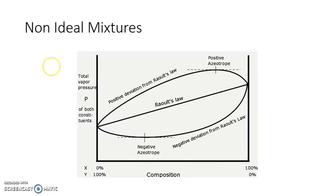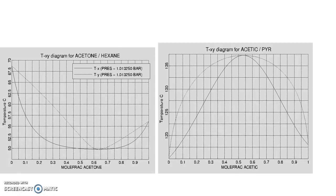When there is a positive deviation there will be a maximum pressure azeotrope, and when there is a negative deviation there will be a minimum pressure azeotrope. It all depends on the intermolecular attractive forces. If the attractive forces between like molecules and unlike molecules are the same, it follows Raoult's law. If unlike molecules' attractive forces are weaker, it leads to positive deviation. If unlike molecules' attractive forces are stronger compared to like molecules, it leads to negative deviation.